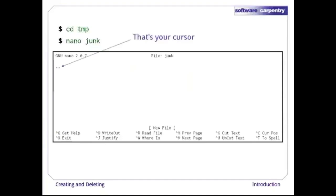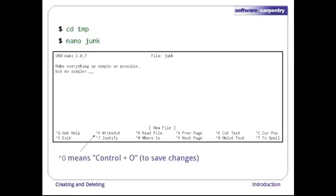Let's type in a short quotation, then use Ctrl-O to write our data to disk. By convention, Unix uses the caret followed by a letter to mean Ctrl plus that letter. Once our quotation is saved, we can use Ctrl-X to quit the editor and return to the shell.